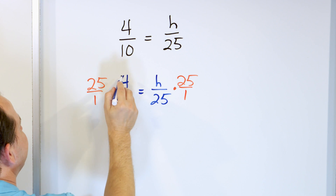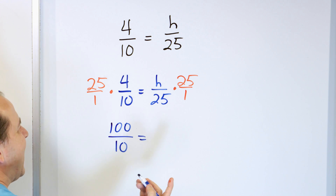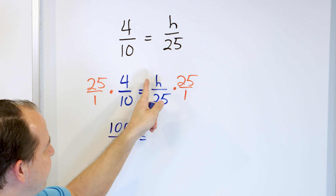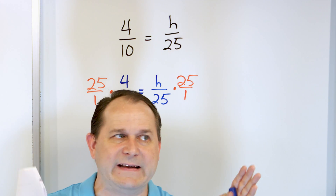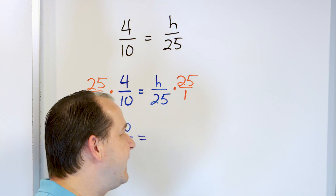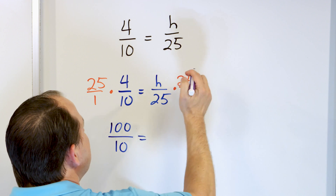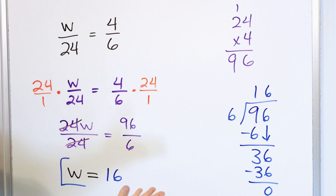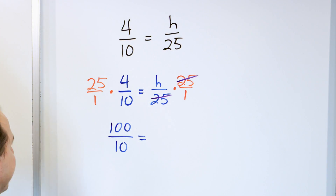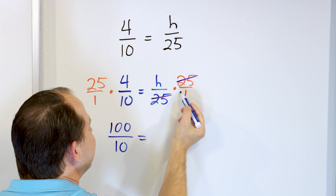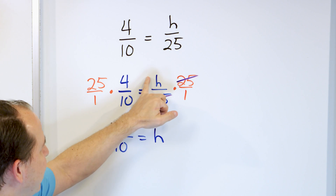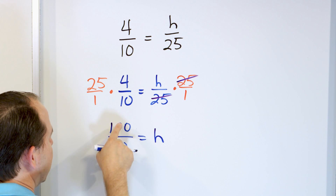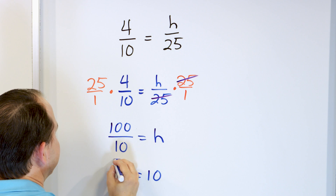On the left, multiply the numerators: 25 times 4 is 100, and 1 times 10 is 10. On the right, we could multiply h times 25 to get 25h, then 25 times one on the bottom — but I want you to see that when you spot the same thing on the top and bottom, you can cancel ahead of time. The 25s cancel, and what pops out on the right is h on the top and one on the bottom. H divided by one is just h. What is 100 divided by 10? It's 10. So h is equal to 10.